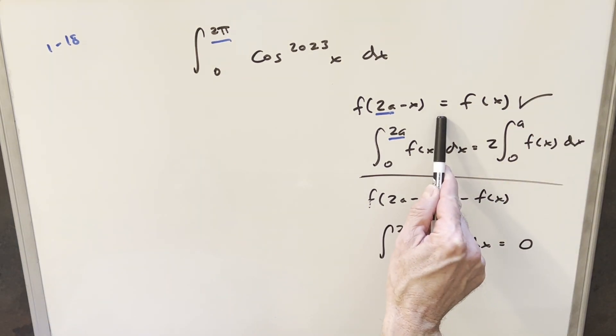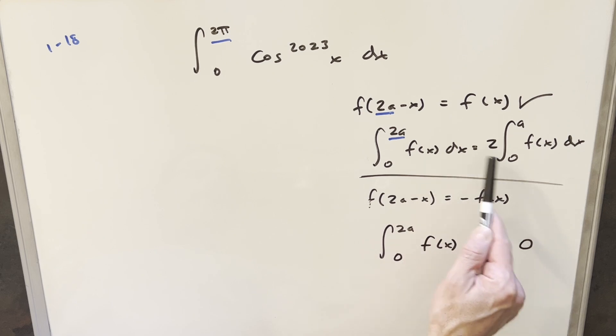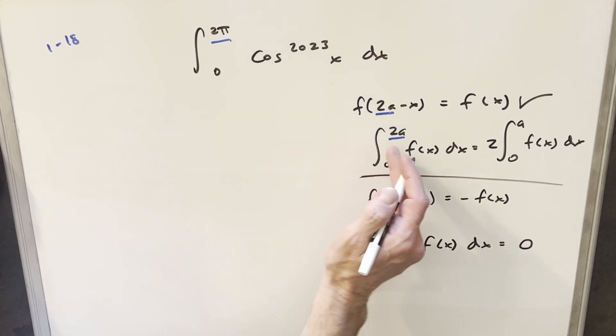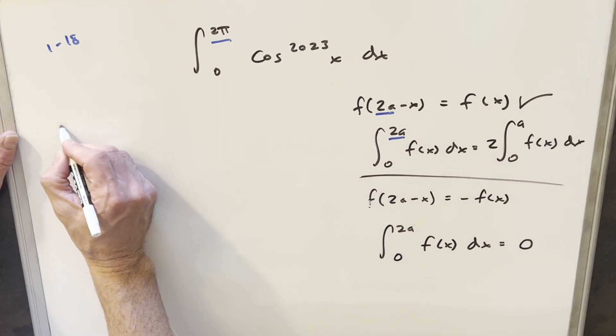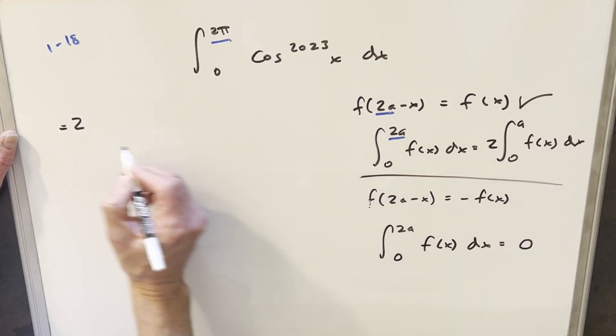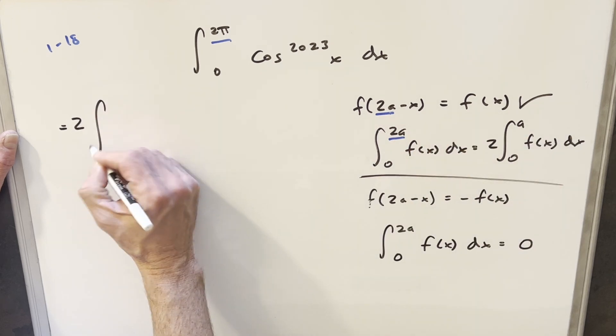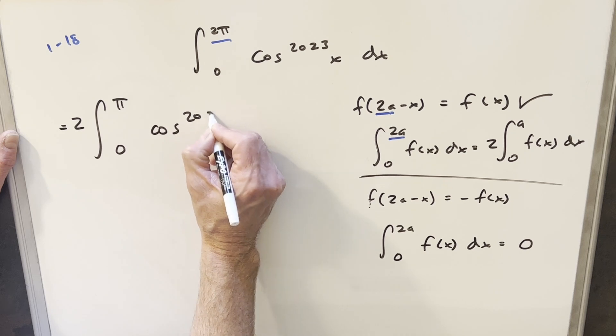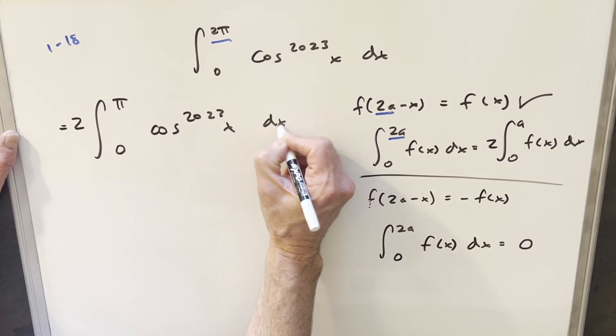So, now, having shown that this first condition is true, we can use this condition to reduce the bound on the integral. So, what's going to happen here is if 2a is 2π, we can write this now, bringing a 2 out front and reducing our bound from 2a to a, so it just cuts it in half. So, we're going to be now going from zero to π of cosine 2023 x dx.